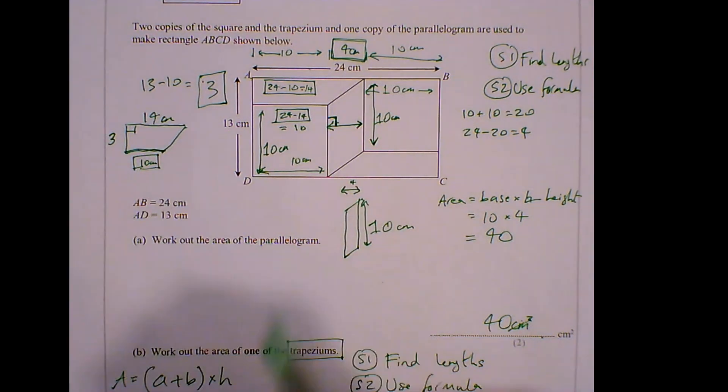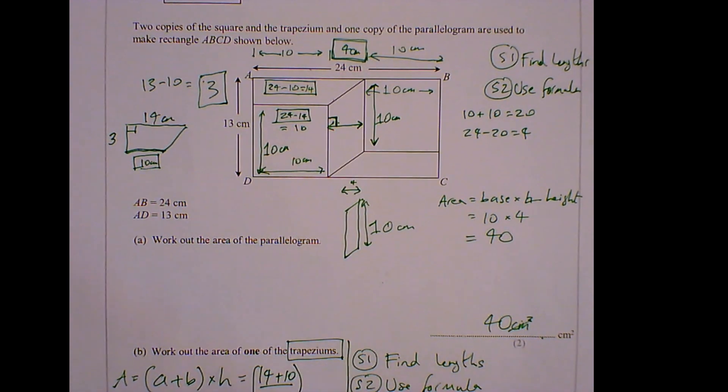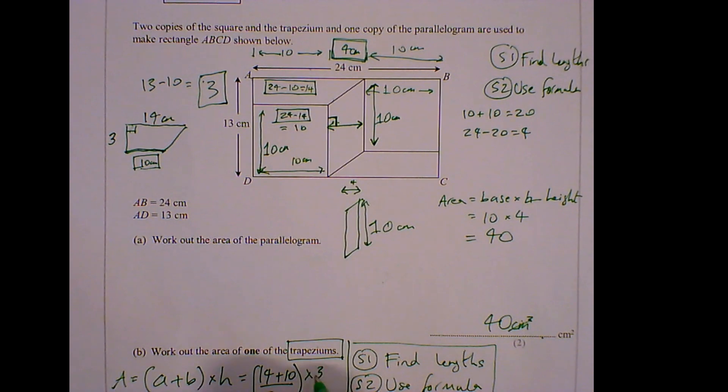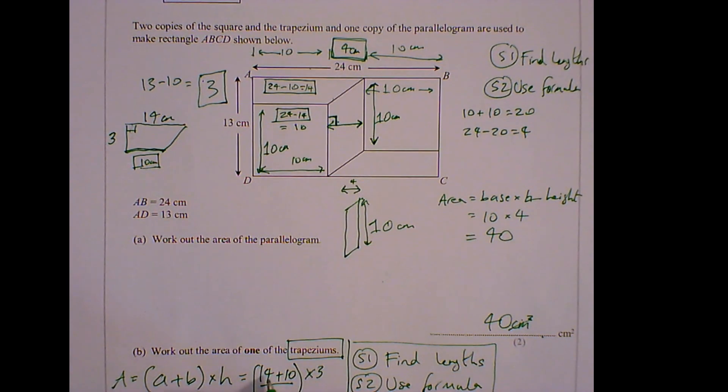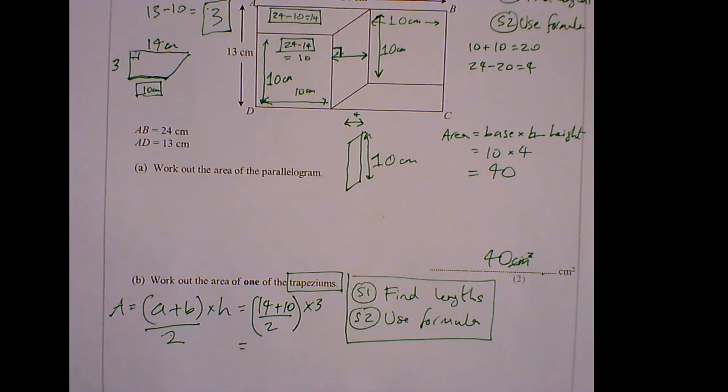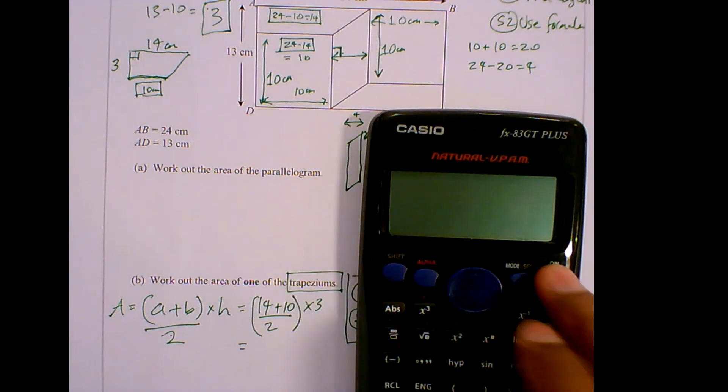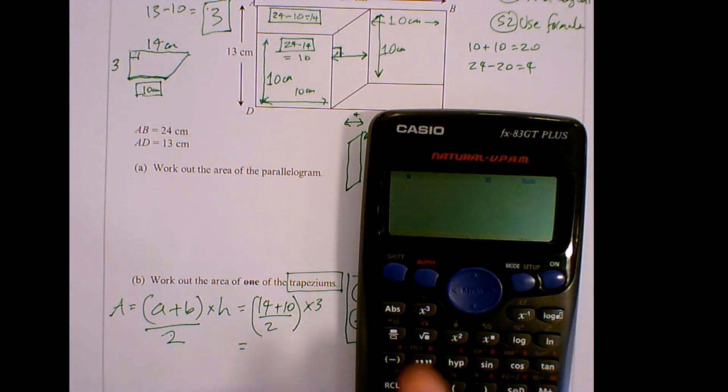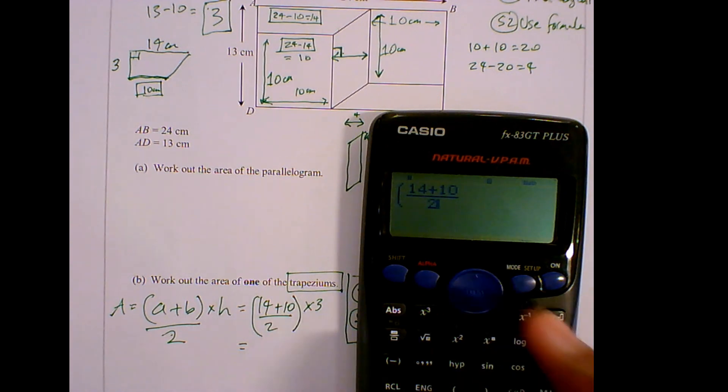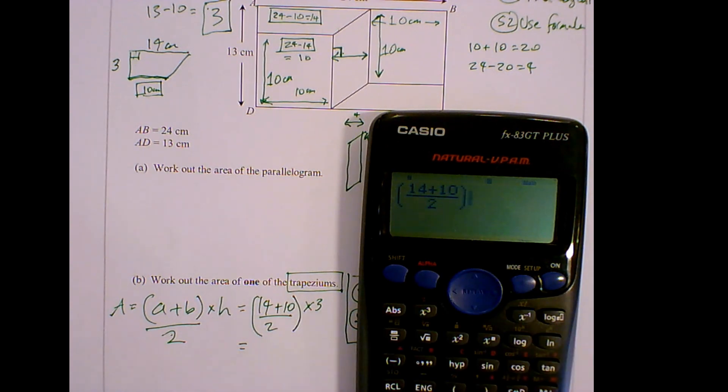I've got A plus B. So A is 14 plus B is 10, divide them by 2, and then I multiply it by my height which is 3. So I can now put this into my calculator. Bracket 14 plus 10 divided by 2, closed bracket times by 3 gives me 36.